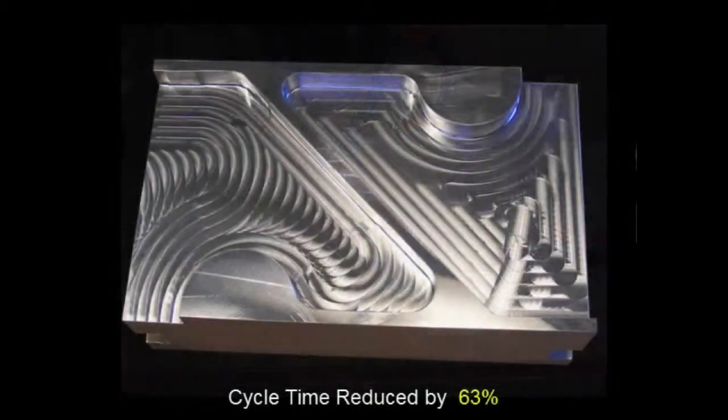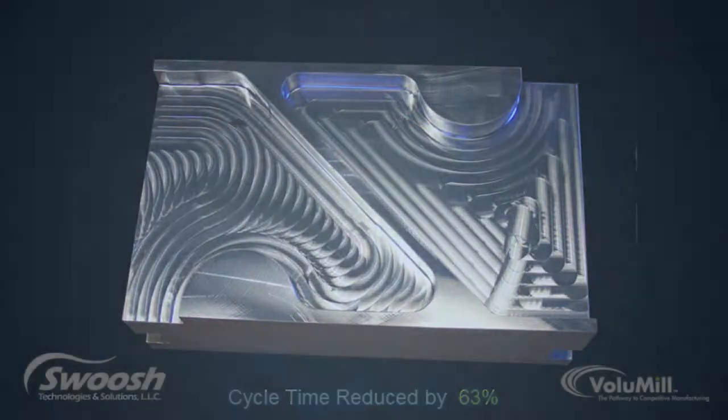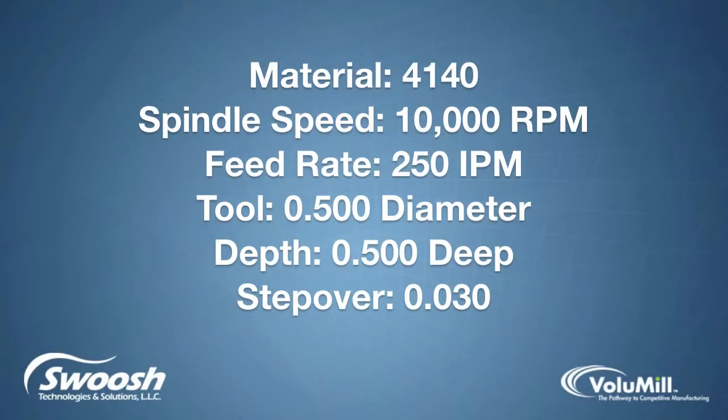Compared to the pocket machined on the right side, Volume Hill reduced the cycle time by more than 60%.